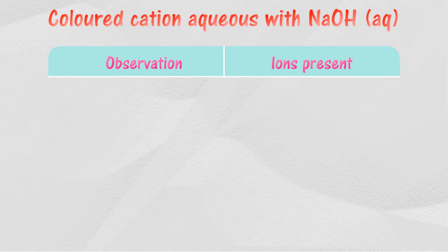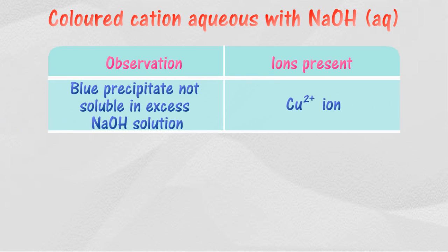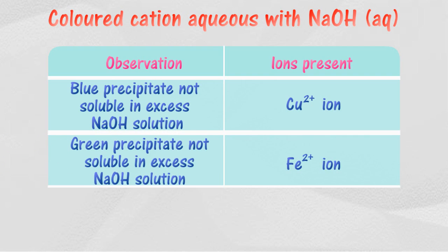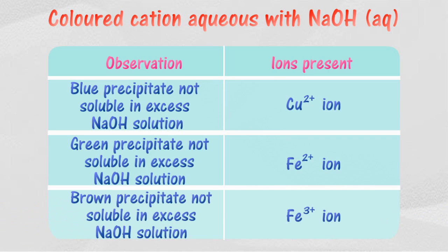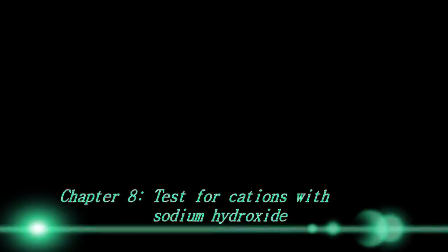For colored cation aqueous solution with sodium hydroxide: if a blue precipitate is formed that is not soluble in excess sodium hydroxide solution, copper ions may be present. If a cream precipitate is not soluble in excess sodium hydroxide solution, iron(II) ions may be present. If a brown precipitate is not soluble in excess sodium hydroxide solution, iron(III) ions may be present.